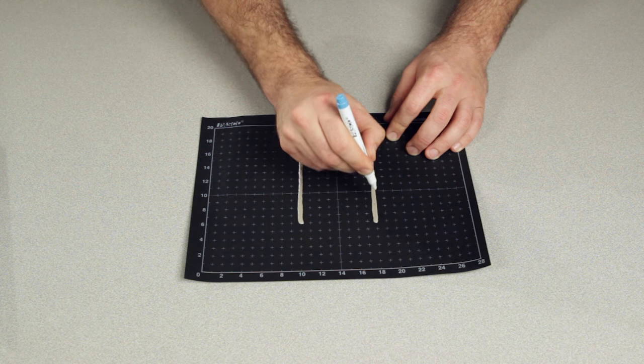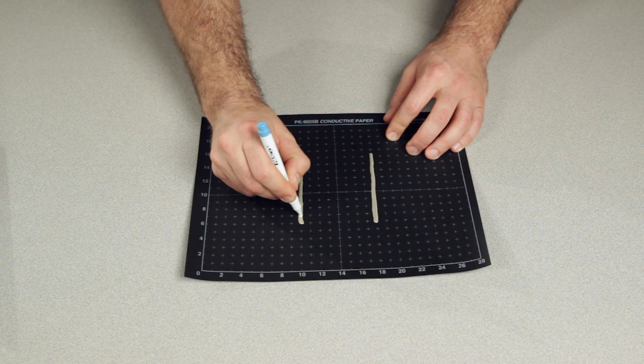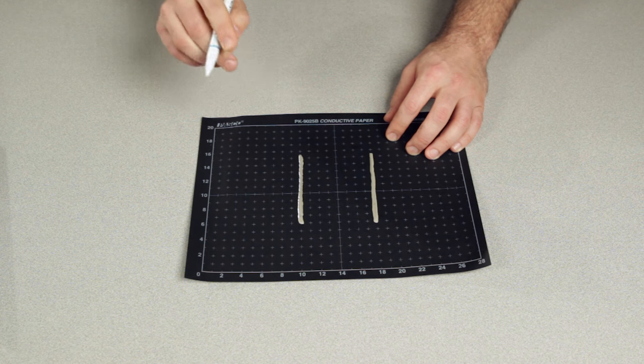To use the kit, first draw two opposing electrodes onto a sheet of semi-conductive paper using the silver conducting ink pen. Wait a minimum of 10 minutes for the electrode ink to dry.